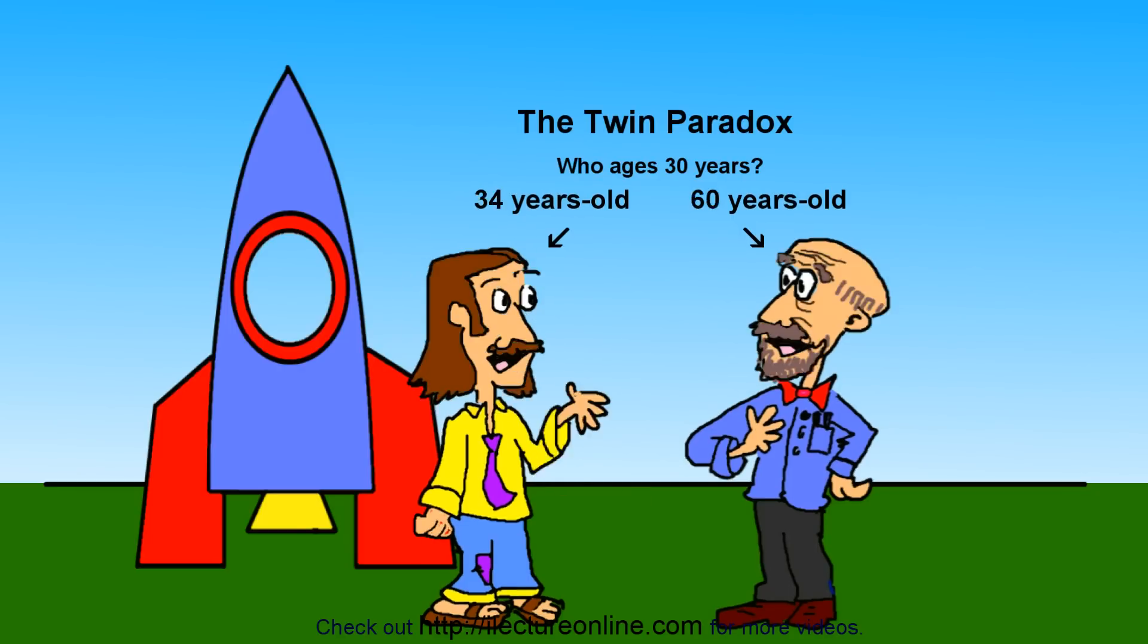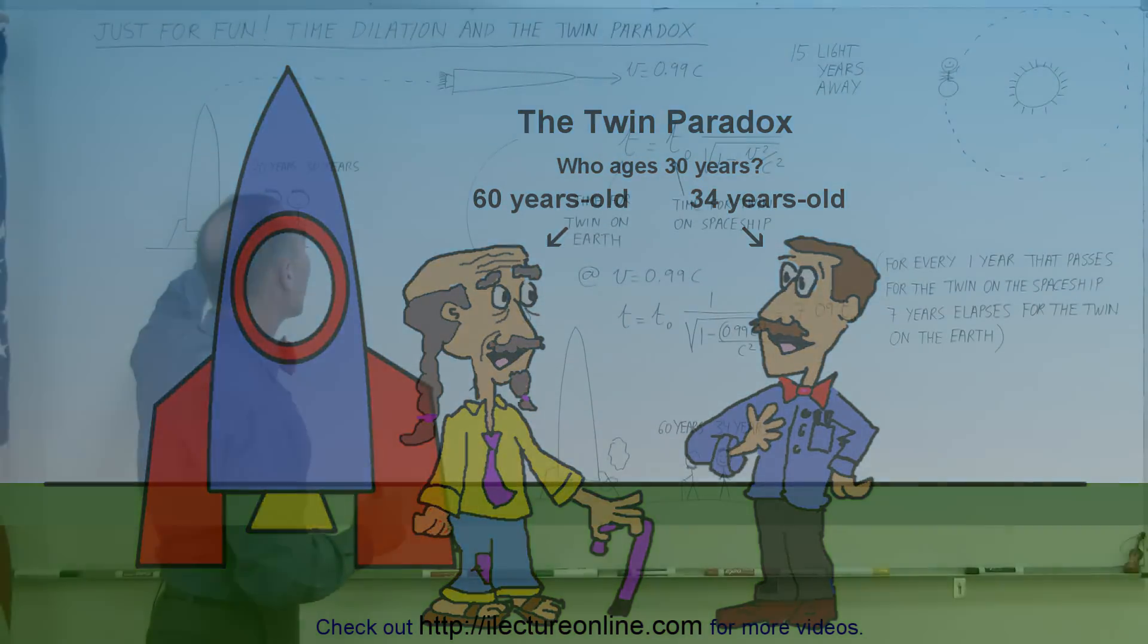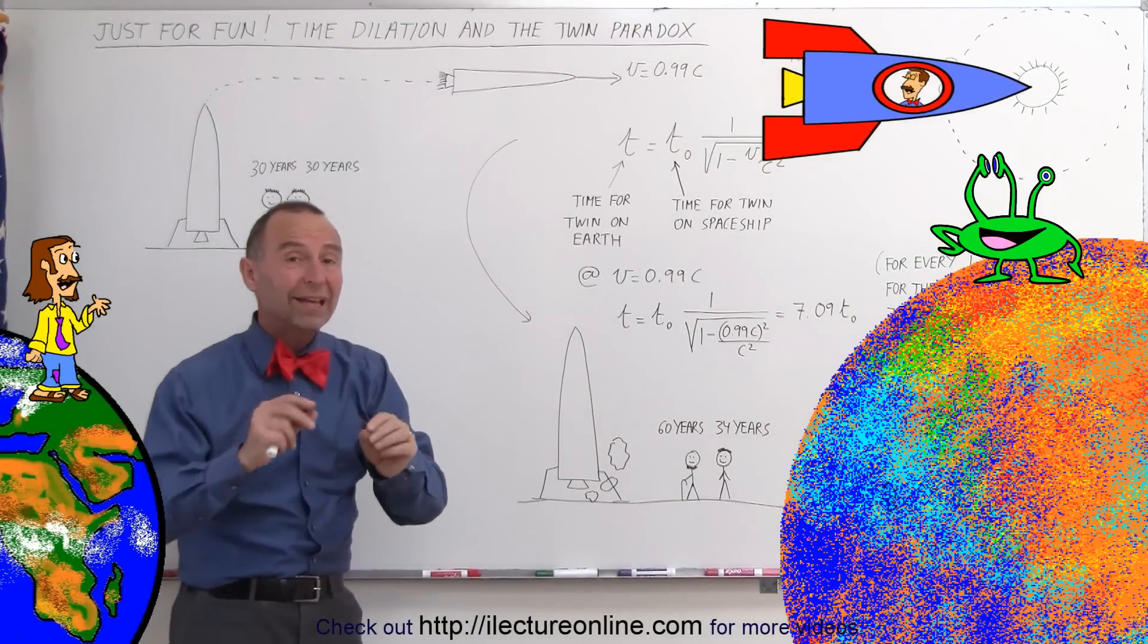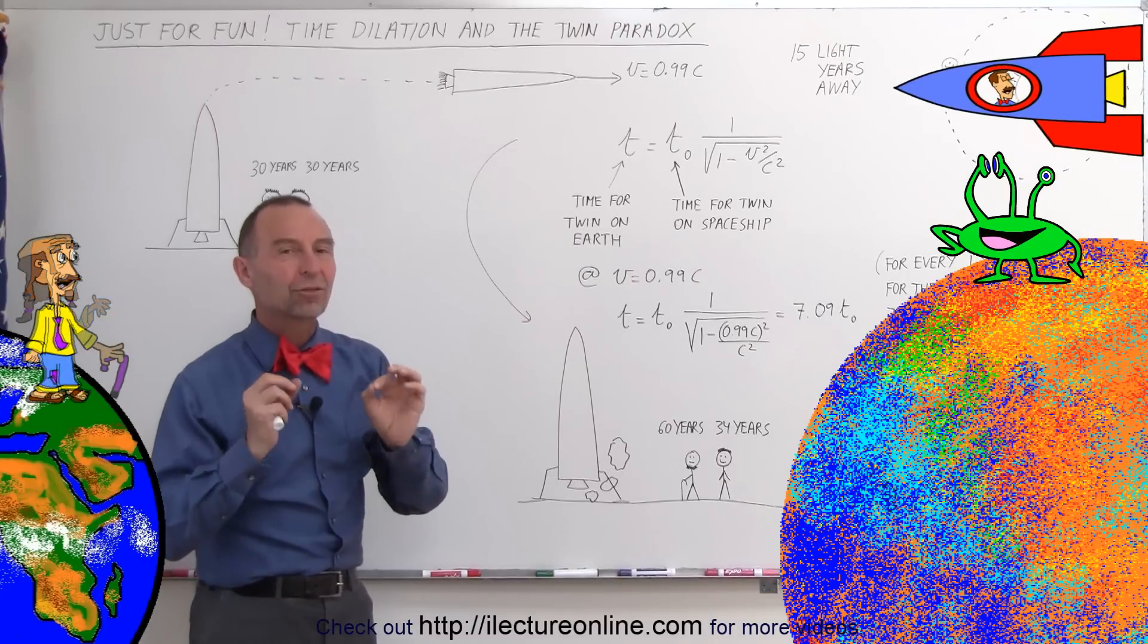But the real solution to that paradox is that it's only the twin in the spaceship that took off, accelerated to nearly the speed of light, moved through space at nearly the speed of light, going and coming back. That's the real key.